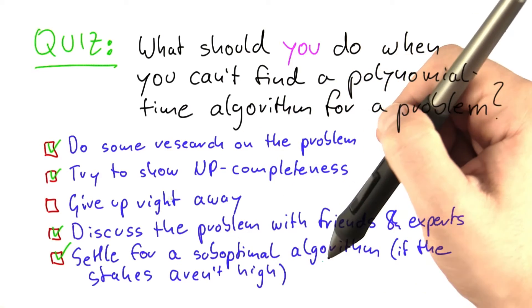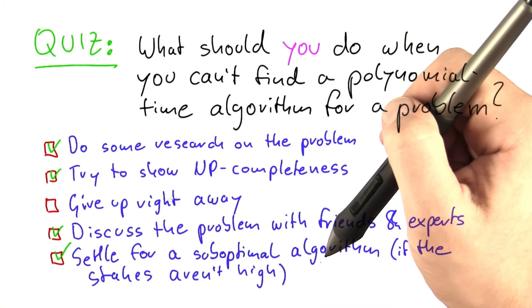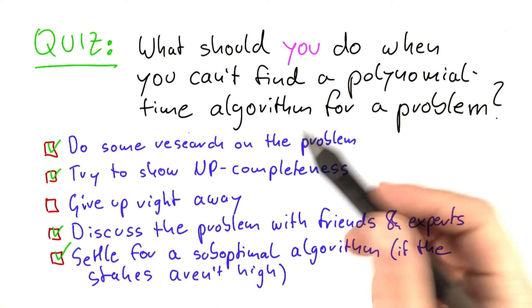And finally settling for a suboptimal algorithm, and we're going to talk more about this in later units, can sometimes also be a good option if the stakes aren't high.